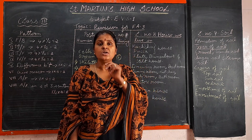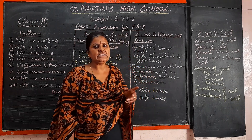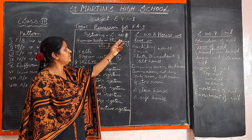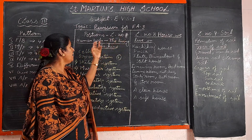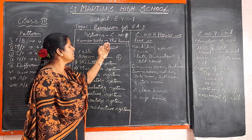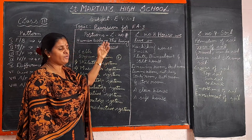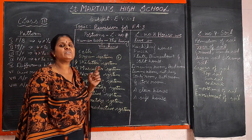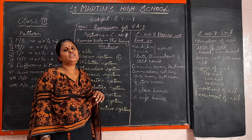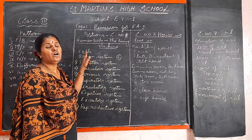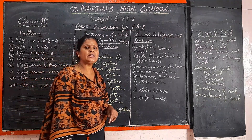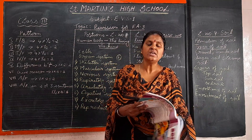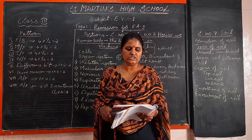Now we are going to revise the lessons. The portion for FA 3 is lesson number 7 — Human Body: The DNA Machine. In this lesson we study about cells. Cells are tiny living organisms. Our body is made up of cells. Cells are very small and can be seen only through a microscope.